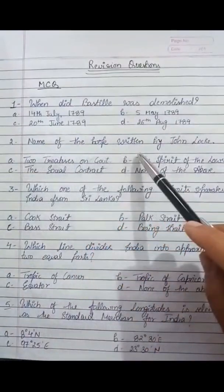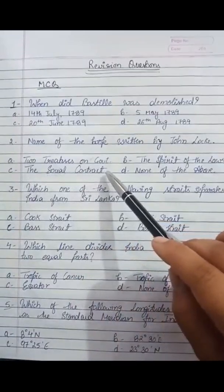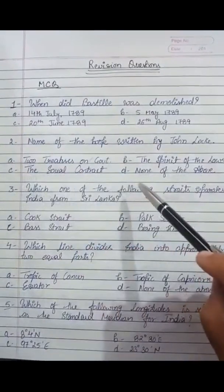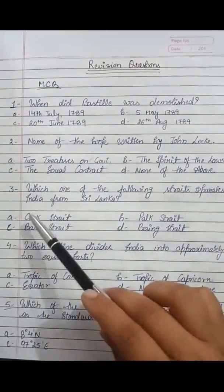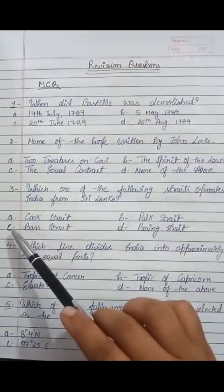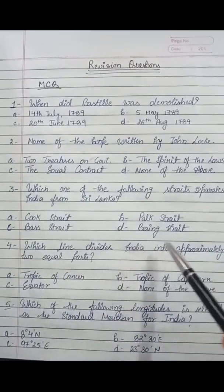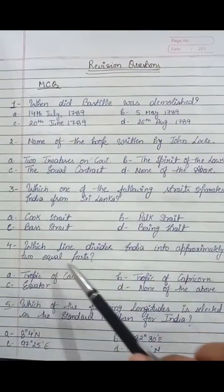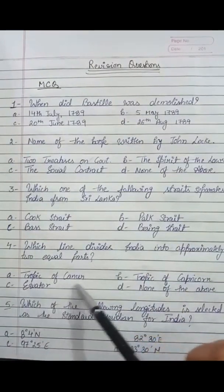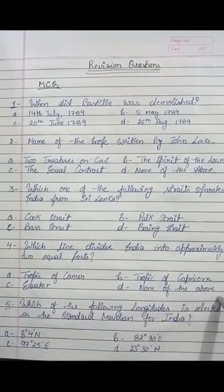Second: name of the book written by John Locke. Third: which one of the following straits separate India from Sri Lanka? First is Cook Strait, second is Palk Strait, third is Bass Strait, and d. Bering Strait. Fourth: which line divides India into approximately two equal parts? Option a. Tropic of Cancer, b. Tropic of Capricorn, c. Equator, d. None of the above.